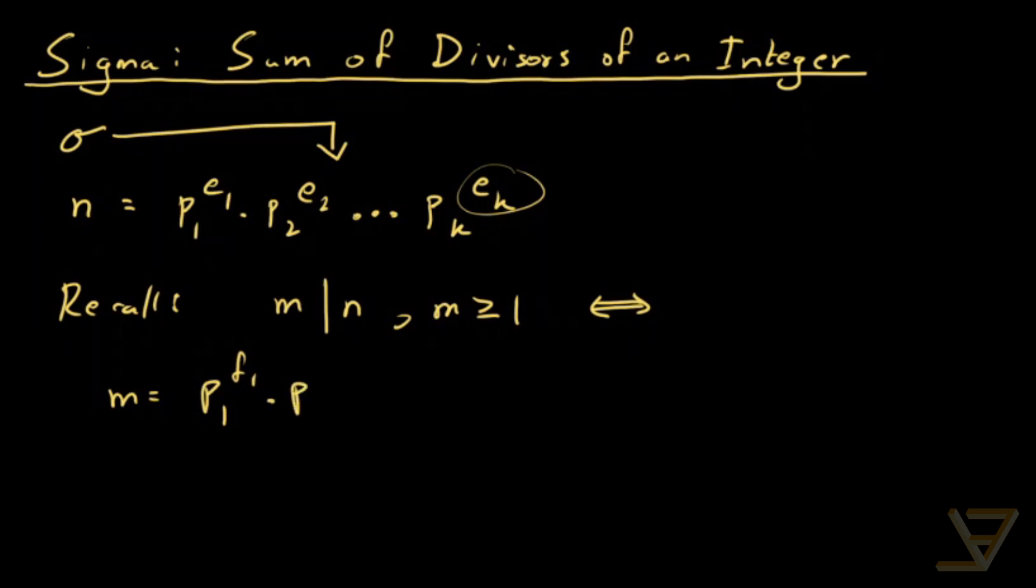Times p2 to the f2 all the way through to pk to the fk, where each fi satisfies that it is between zero and ei inclusive. So it can be zero or ei as well.